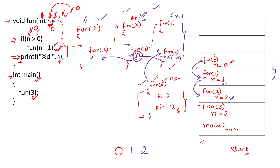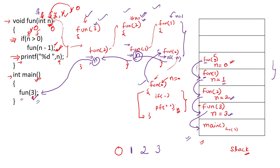After printing 2, we return inside the body of fun(3). Here the value of n is 3, so 3 is printed. From fun(3) we return to main — as seen from the diagram — and nothing more is to be done, so we simply return. The output 0 1 2 3 was printed as the stack unwound.